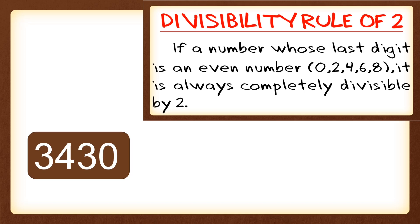And it should be 0, 2, 4, 6, or 8 or an even number. So in this 3,430, the last digit is 0 so that it is an even number. 0 is an even number so that it is divisible by 2. So 3,430 is divisible by 2.